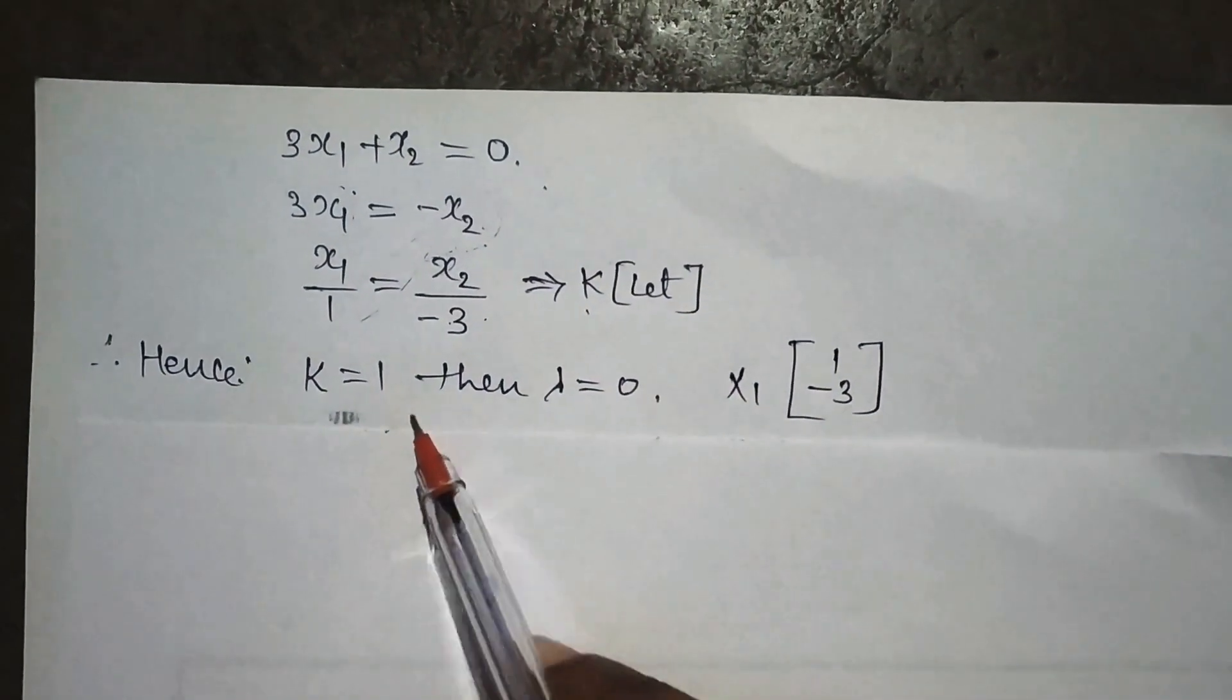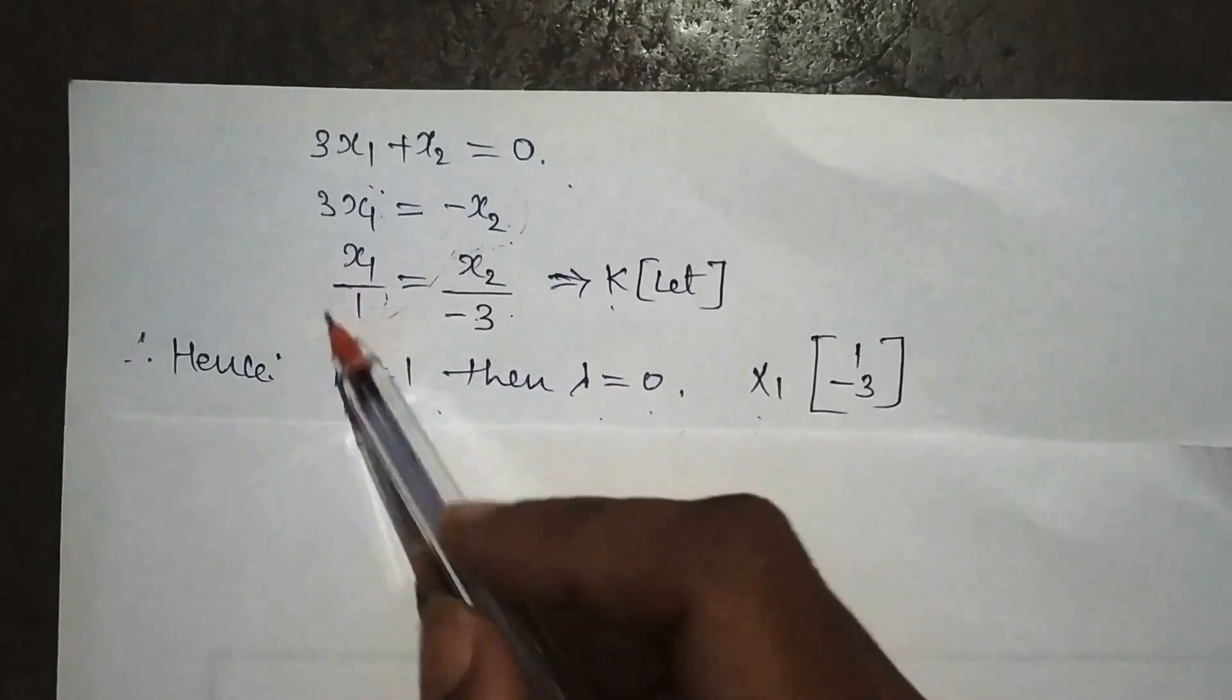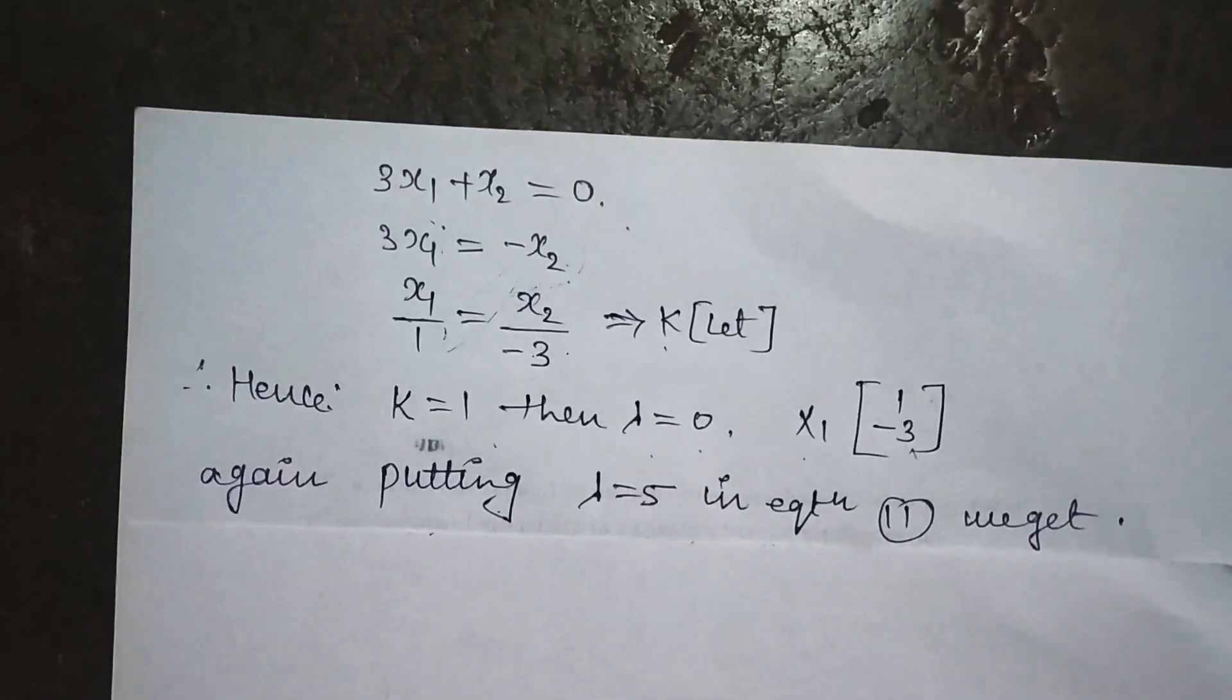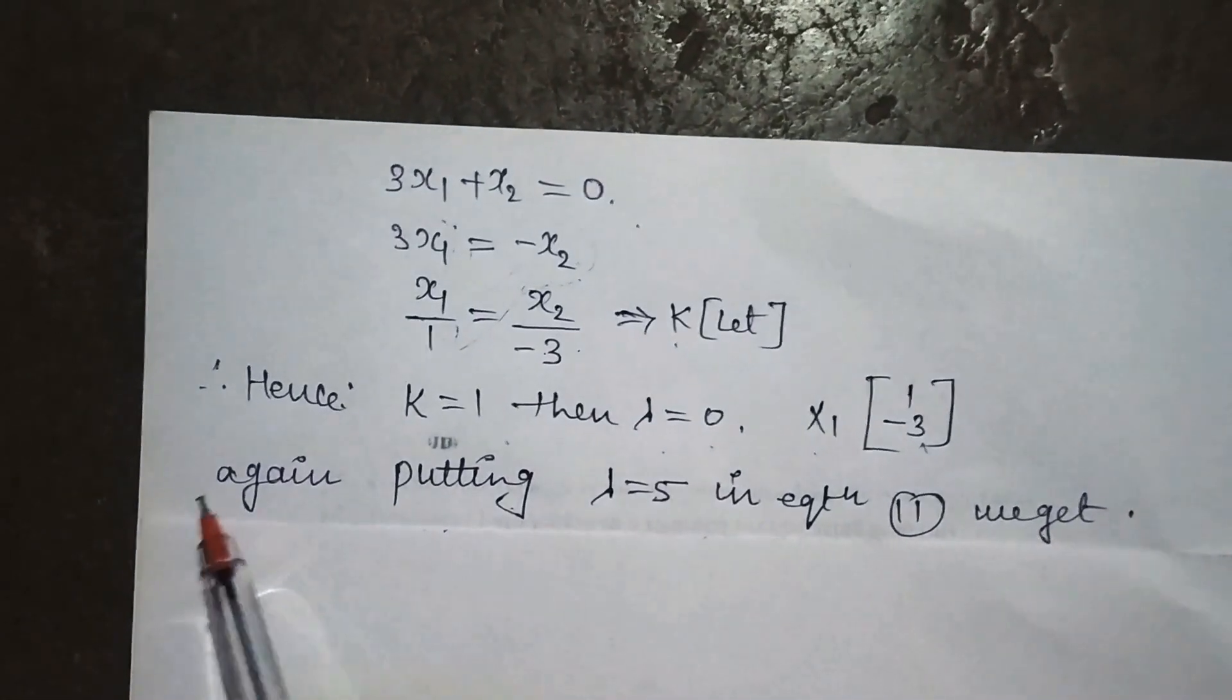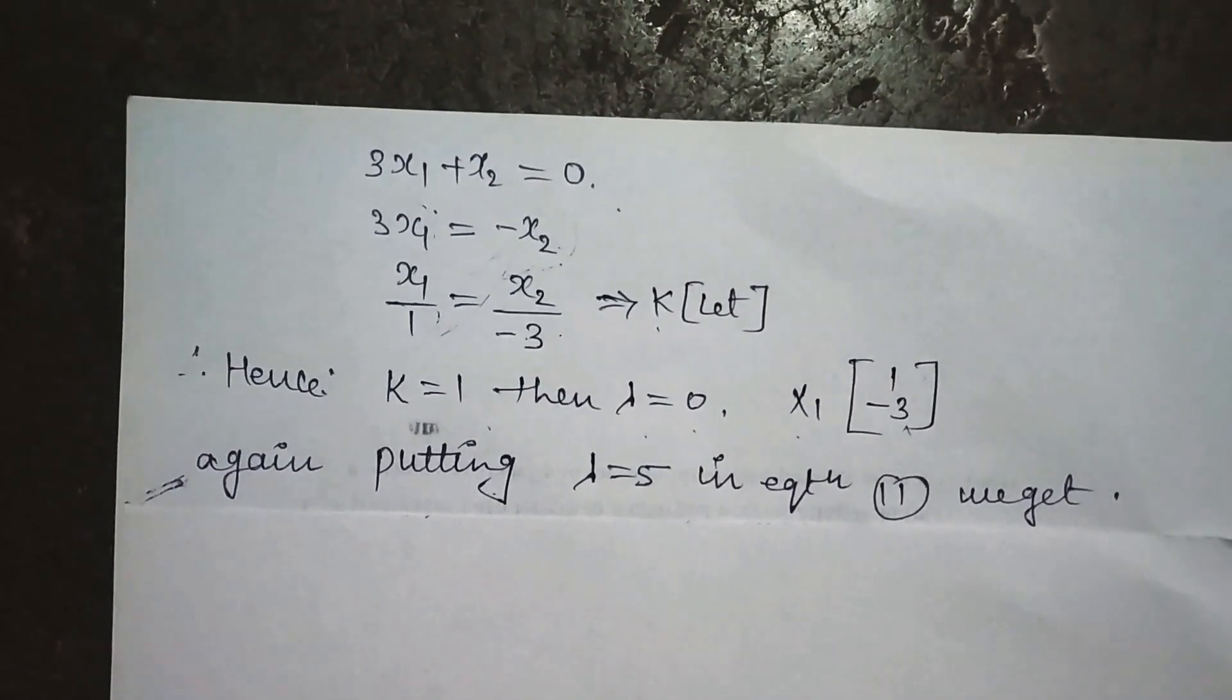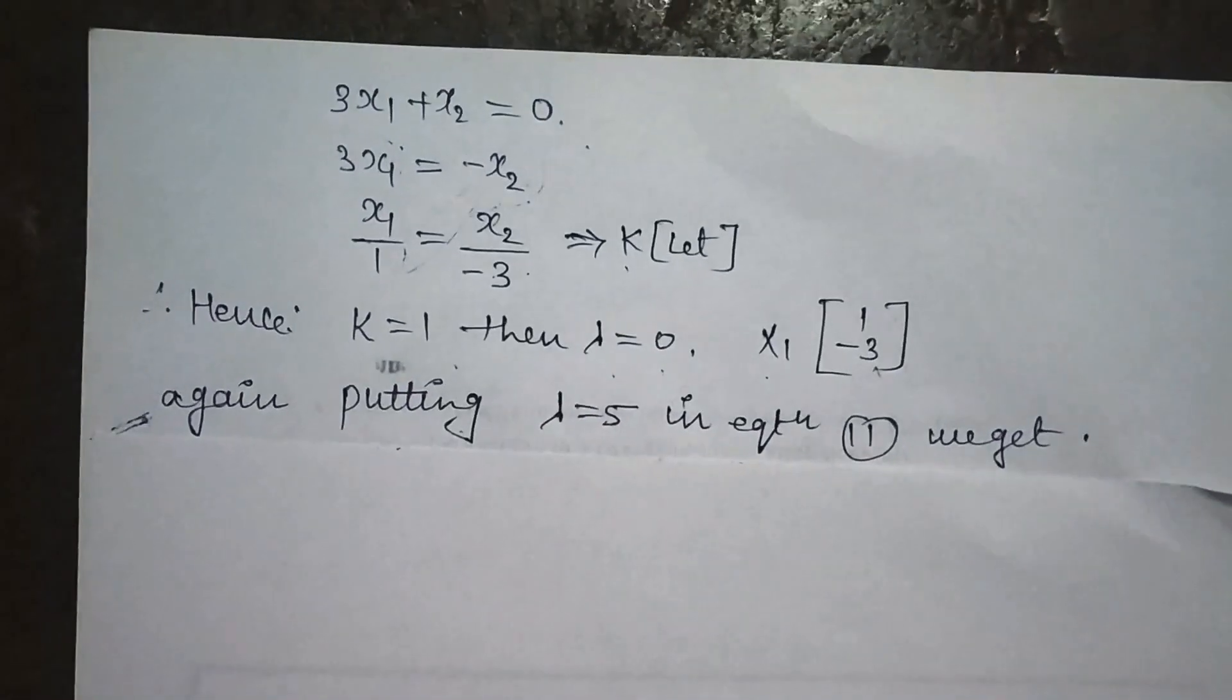When we put k = 1 and λ = 0, the value of x₁ is 1 and x₂ is -3. We put one eigenvalue, now we will put the second eigenvalue, λ = 5.